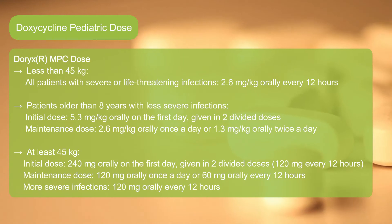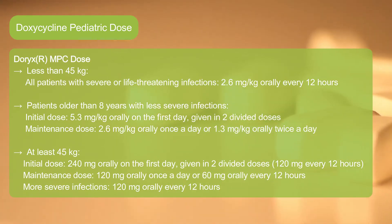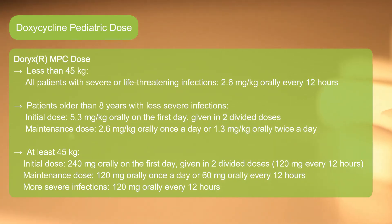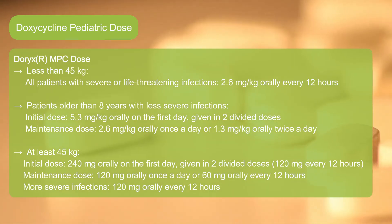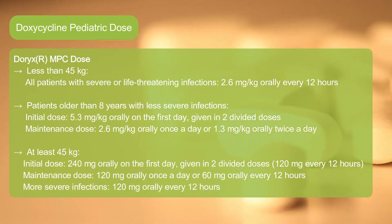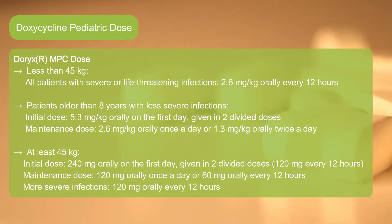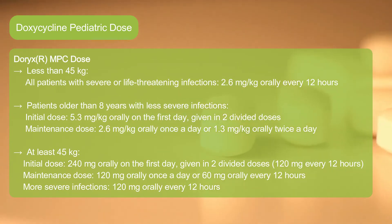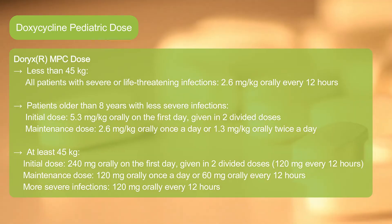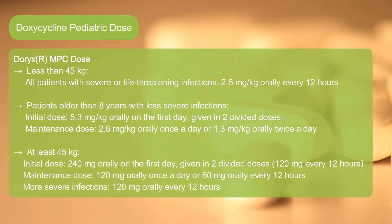Dorix MPC pediatric dose, at least 45 kg: Initial dose 240 mg orally on the first day, given in 2 divided doses of 120 mg every 12 hours. Maintenance dose: 120 mg orally once a day, or 60 mg orally every 12 hours. For more severe infections: 120 mg orally every 12 hours.